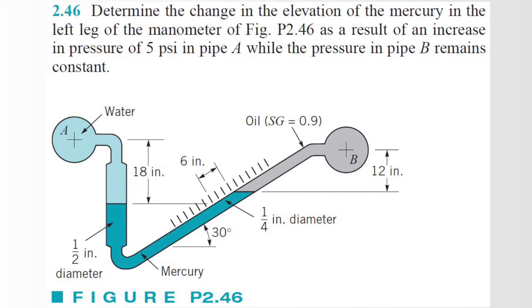What's going on? We got another problem here similar to the last one. The only difference is this one has a change in area on two tubes. The question reads: determine the change in the elevation of the mercury in the left leg of the manometer as a result of an increase in pressure of 5 psi in pipe A, while the pressure in pipe B remains constant.